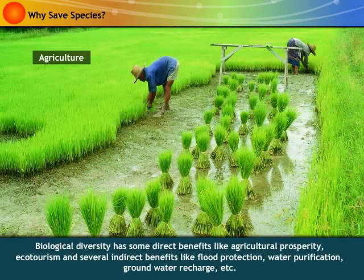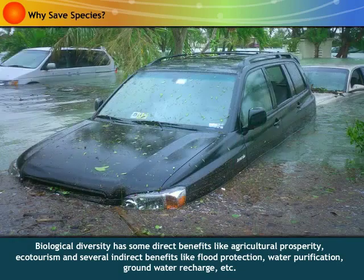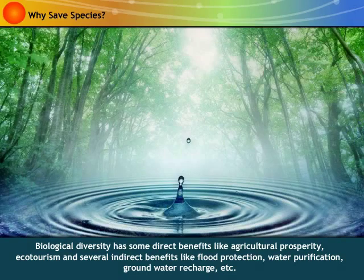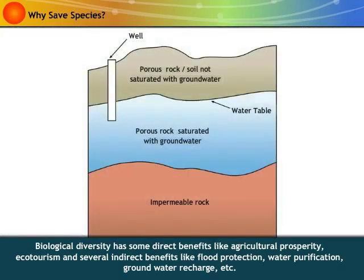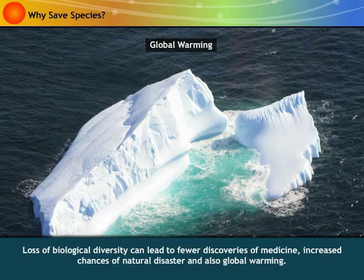Biological diversity has some direct benefits like agricultural prosperity, ecological prosperity, ecotourism, and several indirect benefits like flood protection, water purification, groundwater recharge, etc. Loss of biological diversity can lead to fewer discoveries of medicine, increased chances of natural disaster and also global warming.